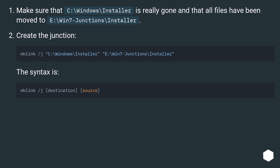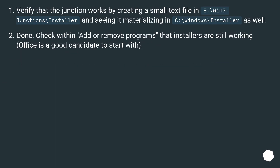Create the junction using the appropriate syntax. Verify that the junction works by creating a small text file in E:\Win7Junctions\Installer and seeing it appear in C:\Windows\Installer as well. Once done, check that add or remove programs and installers are still working — Office is a good candidate to test with.